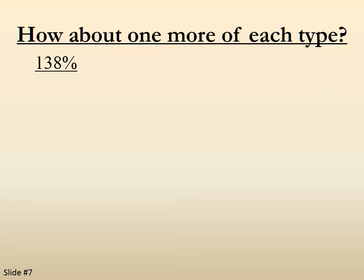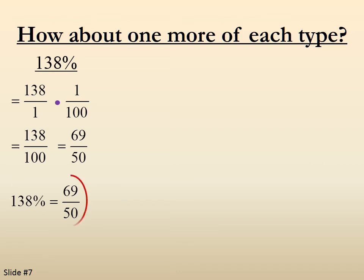So 138 percent. 138 over 1 times 1 over 100. We've written it as a fraction, and we're going to multiply by 1 over 100. That's the percent sign. 138 over 100 reduces to 69 over 50, so 138 percent equals 69 over 50. And it's an improper fraction, notice that, because the percentage is greater than 100.